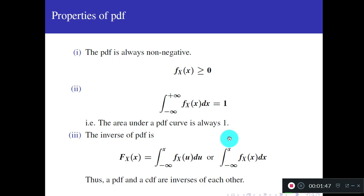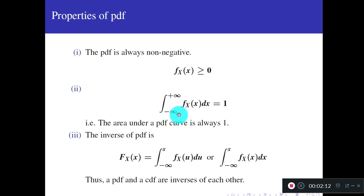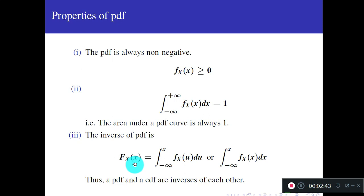PDF is obtained by differentiating the CDF. Some properties of PDF required for application problems: first, PDF is always non-negative — f_X(x) ≥ 0. Second, the integral from minus infinity to infinity of f_X(x) dx equals 1. This integral gives the area under the probability curve, which is always 1. The inverse relationship: F_X(x) = integral from minus infinity to x of f(u) du.